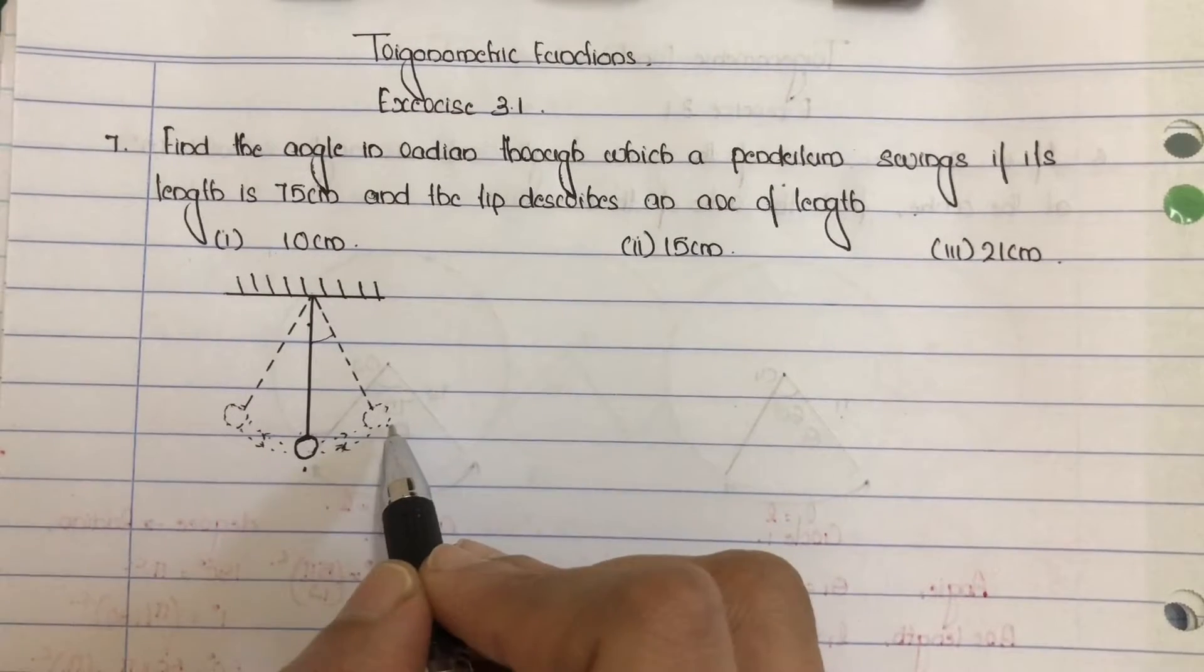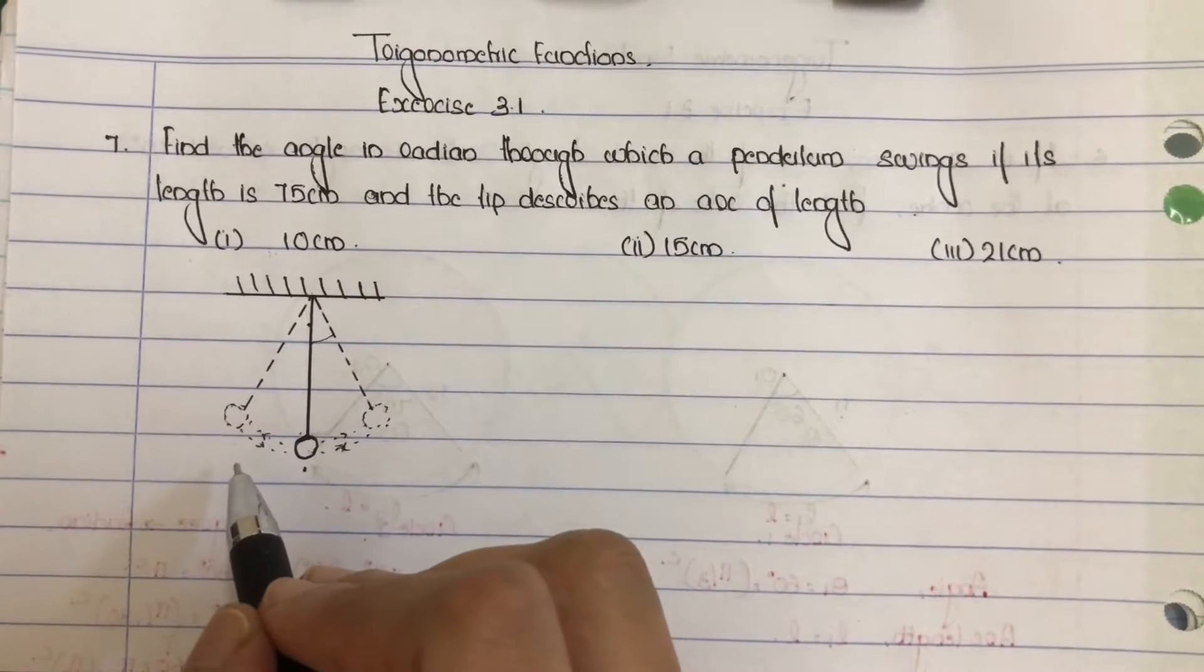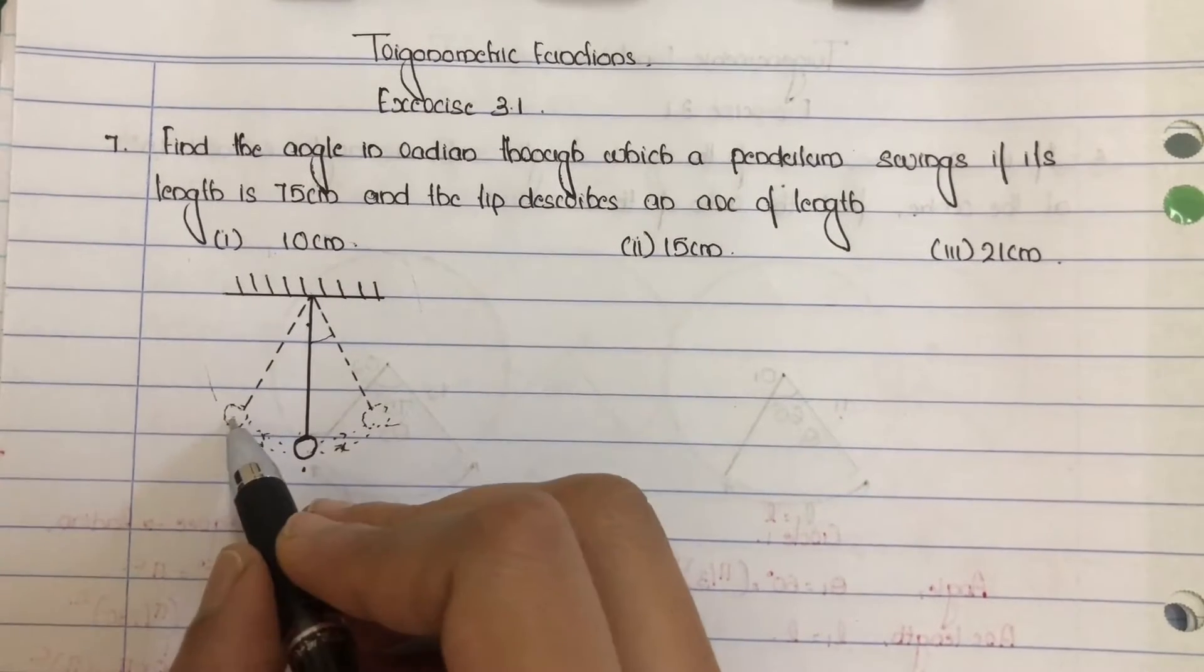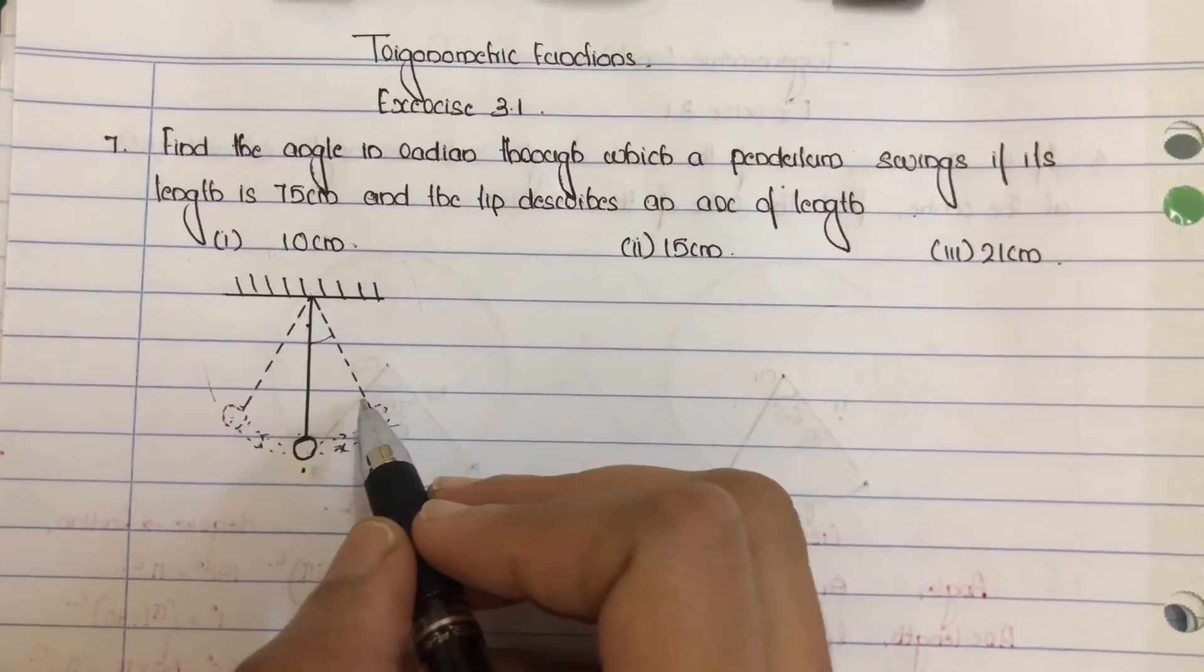From resting position towards right, the same distance. Towards left, the same distance. This position is the same length. Same string is the same length.